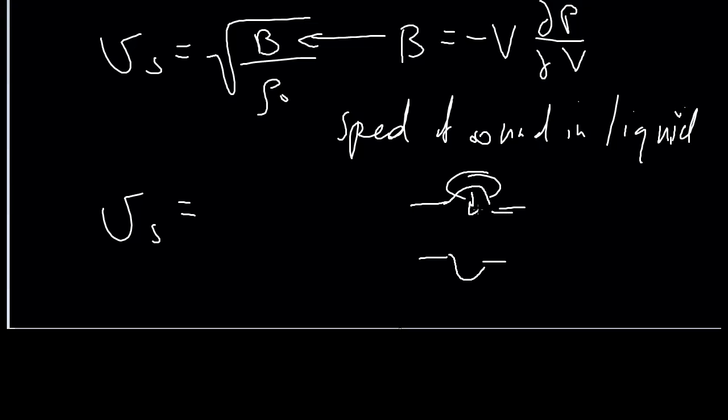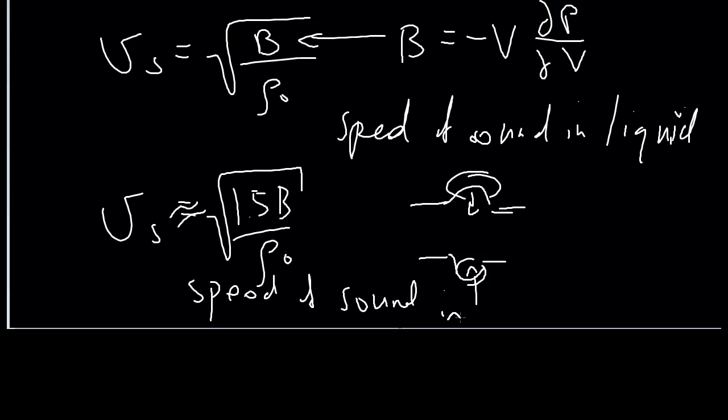But the things on the side are going to press it back in, so it's going to be a little harder for it to press outwards. So we have an additional 1.5, roughly 1.5 factor in the bulk modulus. And that's the speed of sound in a solid.